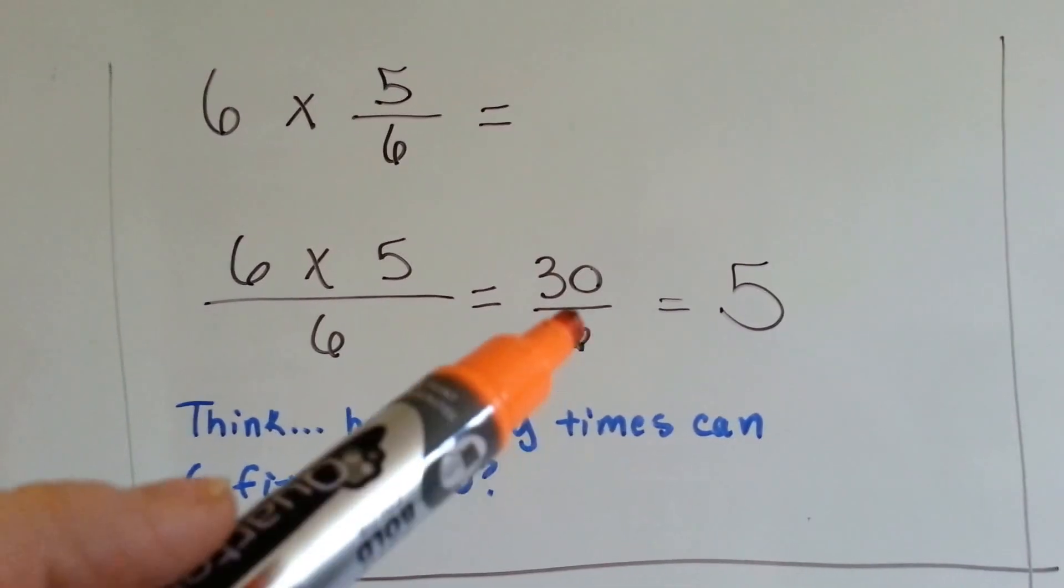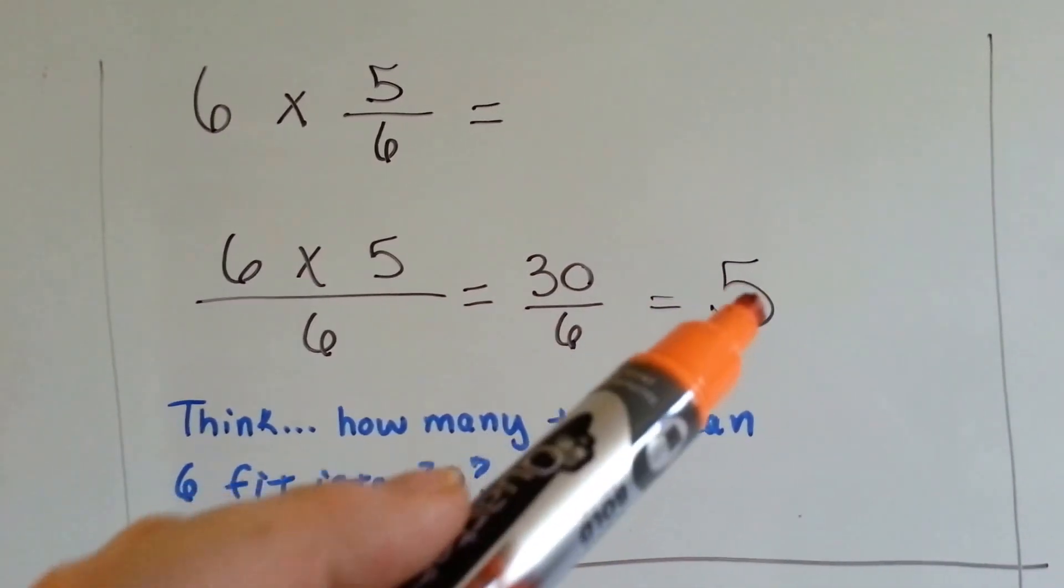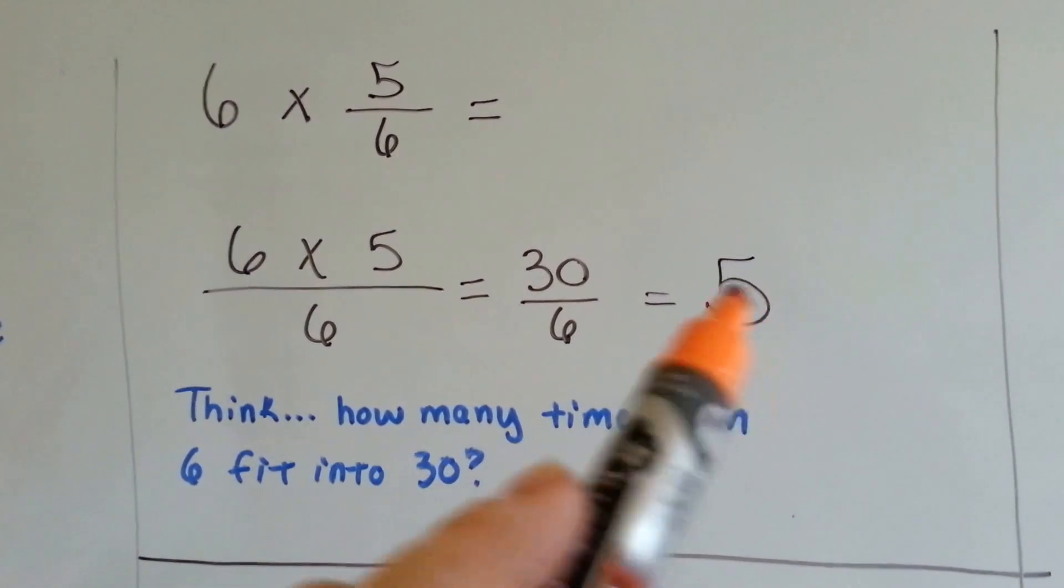And we ask ourselves, how many times can this 6 fit into the 30? 5 times evenly. We don't even have a fraction, we have a whole number for an answer.